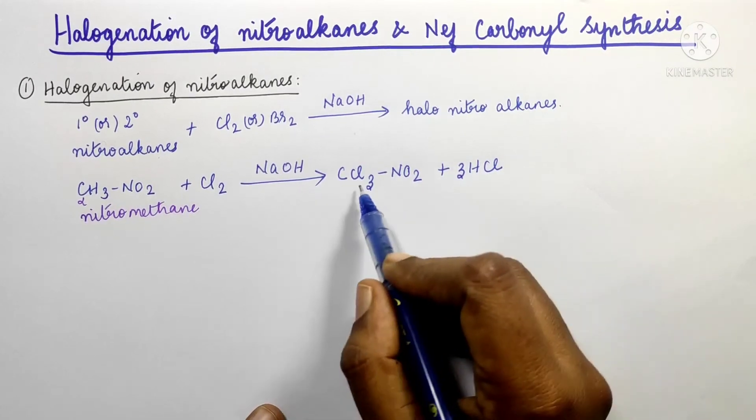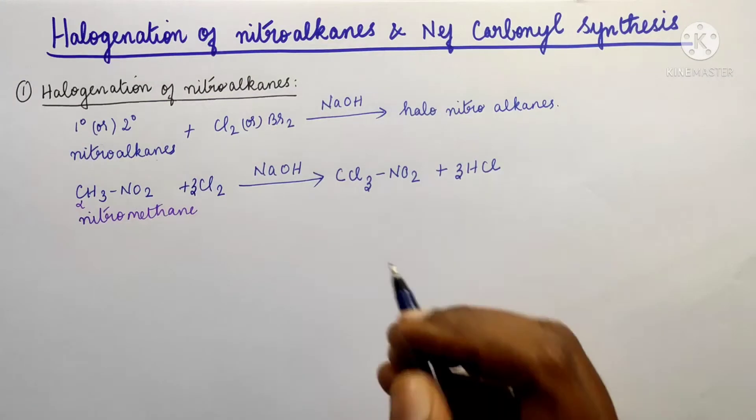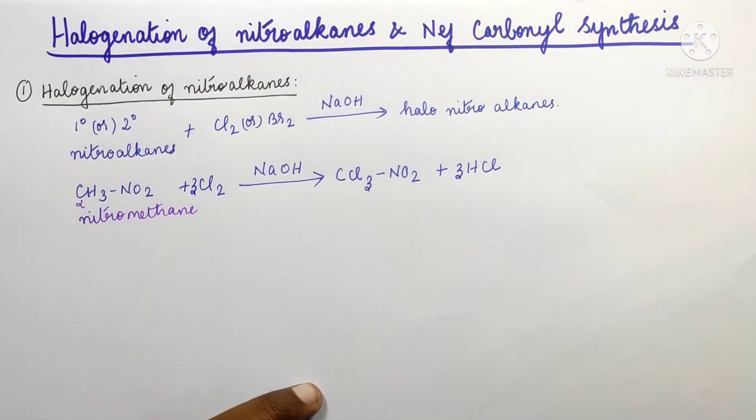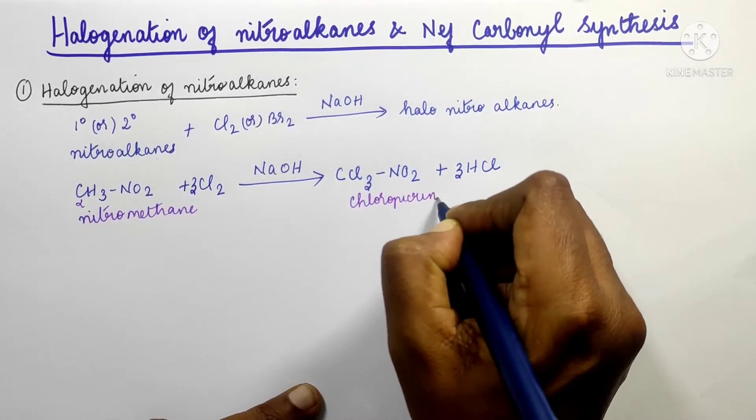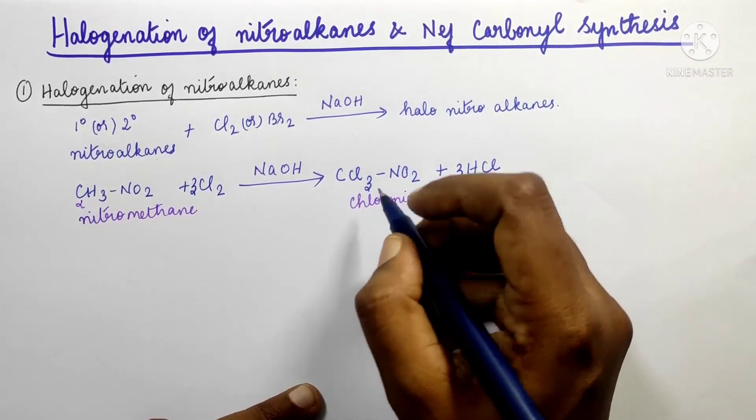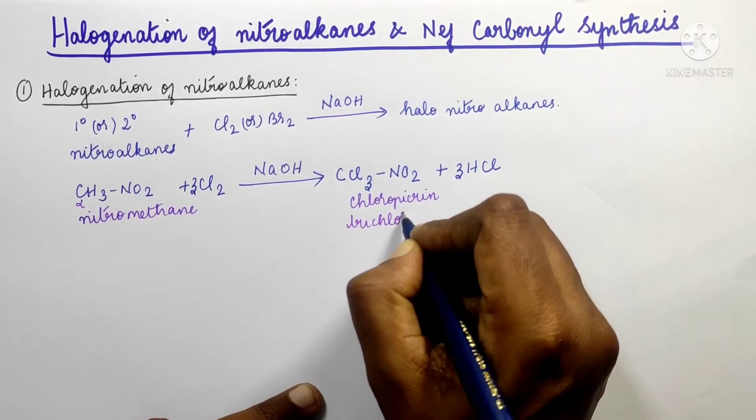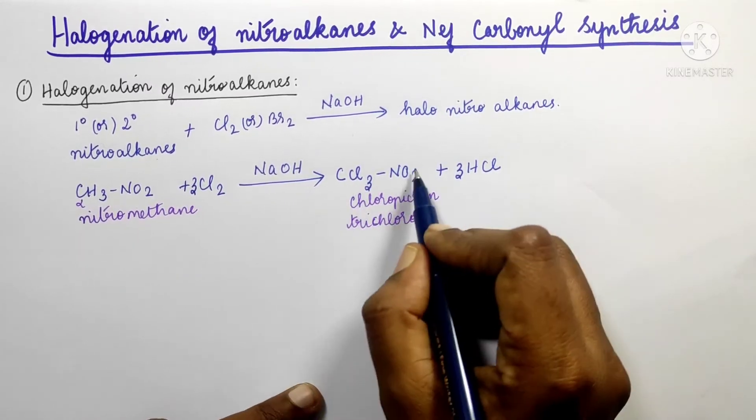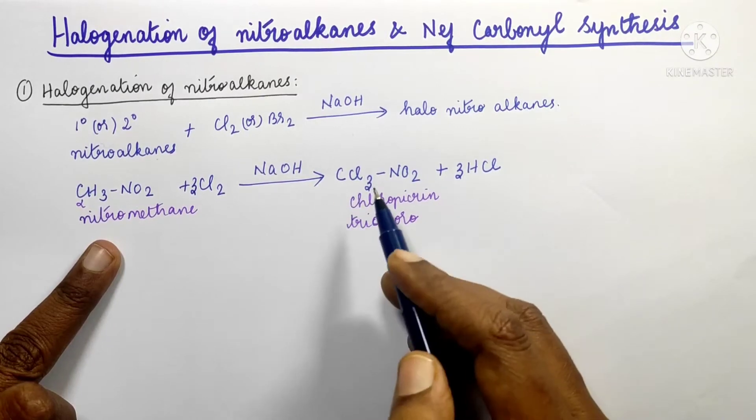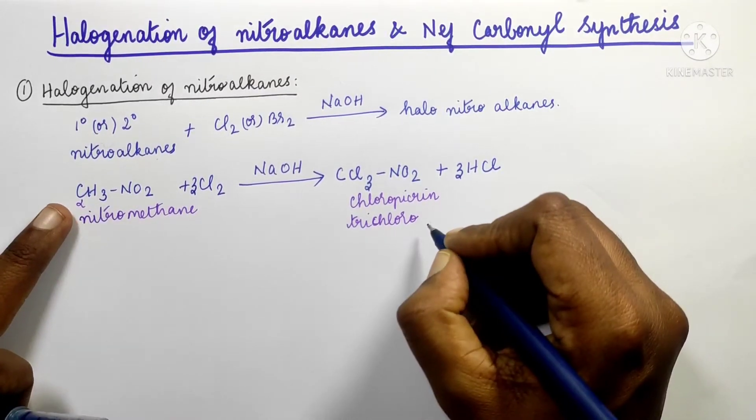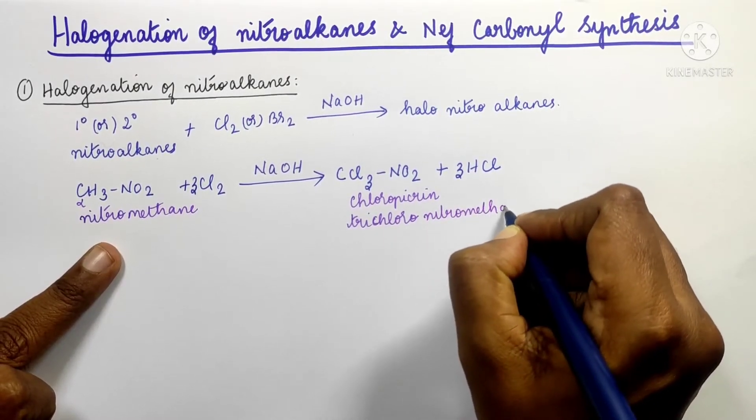Cl is 3, and 3 HCl means 3×2 equals 6 total atoms balanced. So this is CCl3NO2, which has the common name chloropicrin. The IUPAC name is trichloro - since this part is nitromethane and we replace hydrogen with Cl, it is trichloronitromethane.